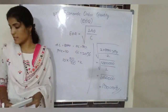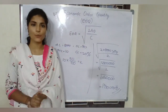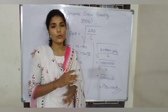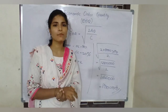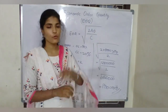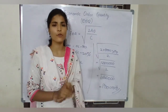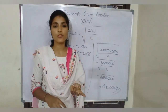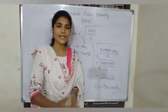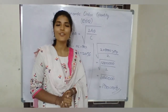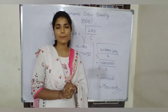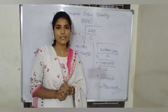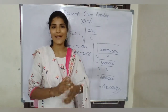Understood? This is the calculation part from unit 2. Compulsory, you can expect EOQ for the problematic question. If they are giving a problematic from unit number 2 for 4 marks, EOQ is 100% expected. Apart from EOQ, there is another problematic called stock levels, which I will upload in the next video. Till then, practice EOQ. I hope you understood — if you have any doubts, let me know in the comment section. See you in the next video, bye bye everyone.